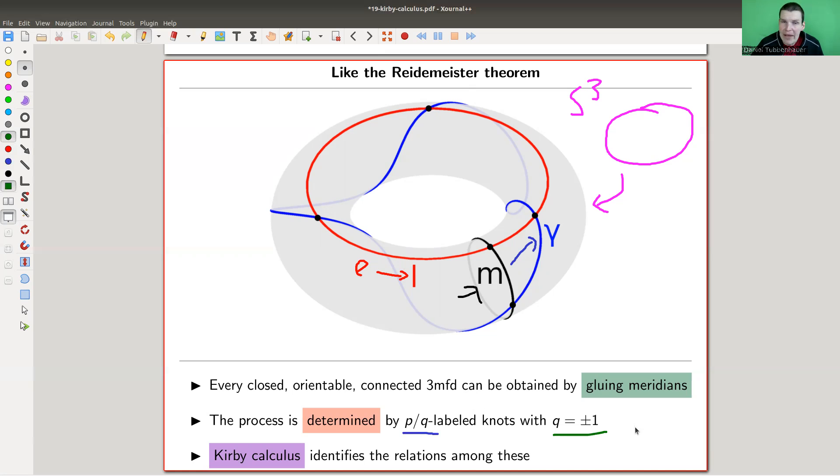But it's not quite complete. What we really want is to identify the relations among those, such that we can say, okay, here are some knots, and the knots will be labeled by some P, Q numbers. And we want to say, are the three manifolds that we obtain by surgery the same or not? So we want the diagram calculus on knots that kind of decides this question for us. And that's what is this Kirby theorem, the Kirby calculus. And this is really like a Reidemeister theorem, we will see a more precise statement in a few slides, not too far away.